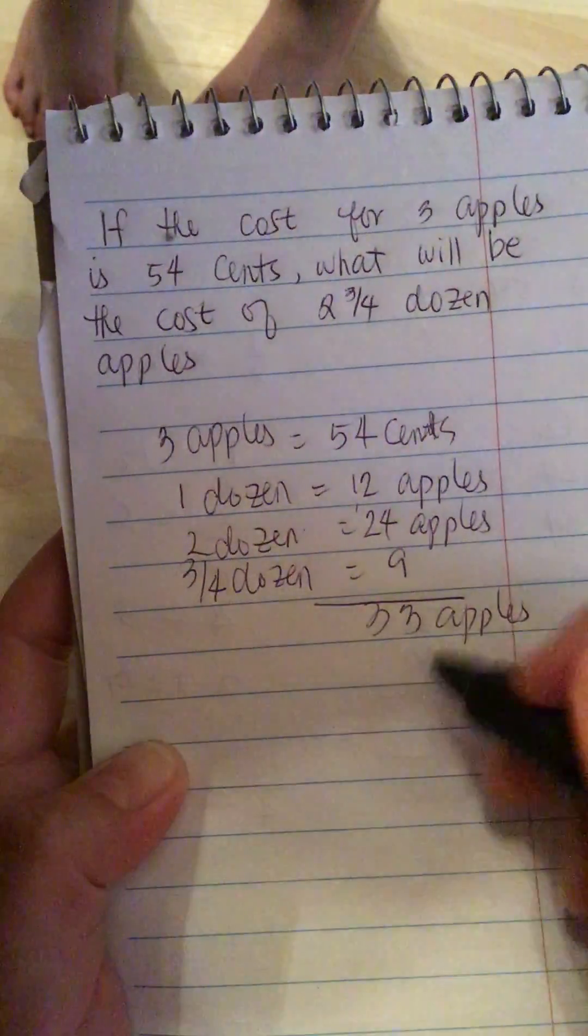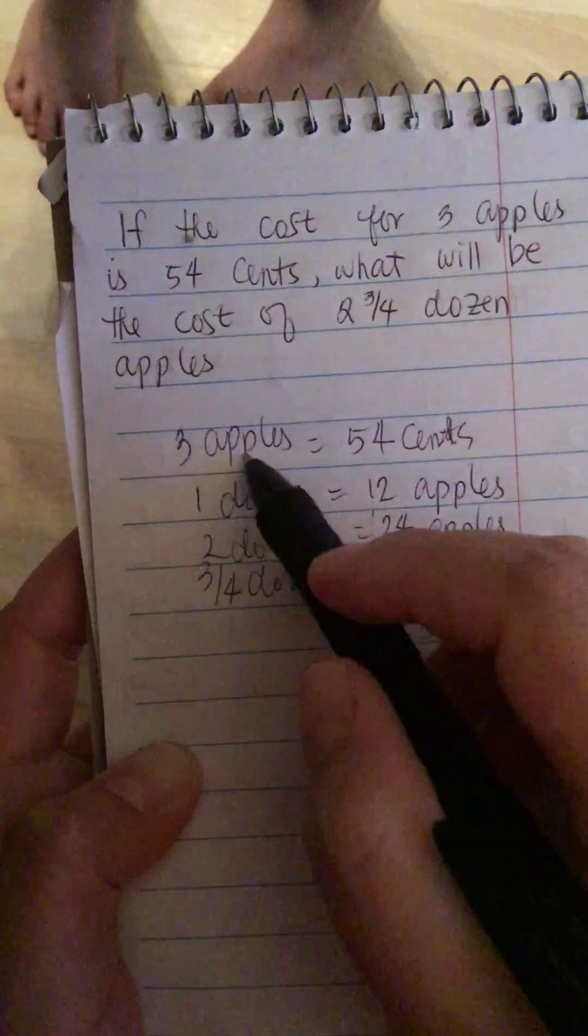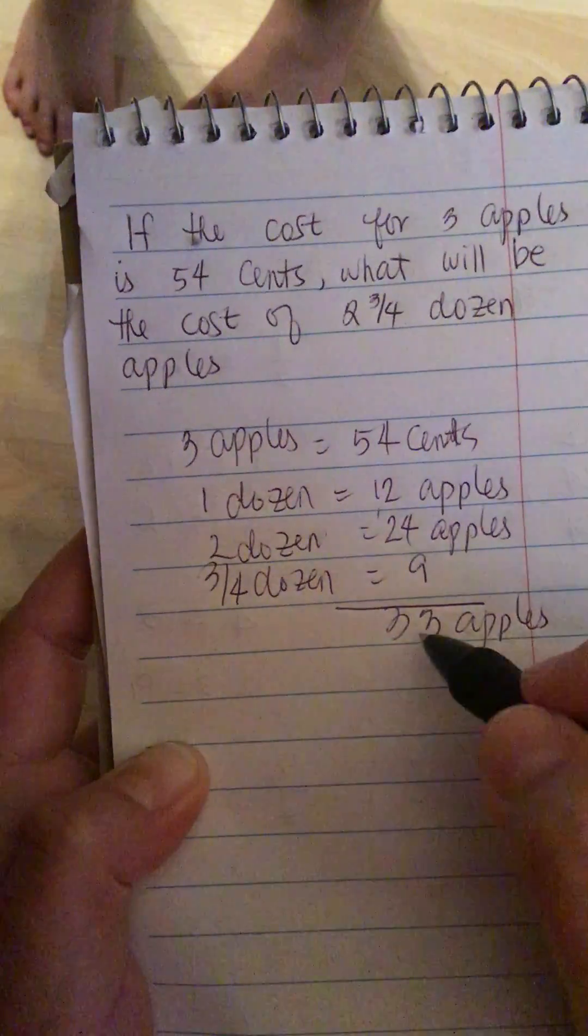So now we have 33 apples total. Now if three apples is equal to 54 cents, so if we divide this.